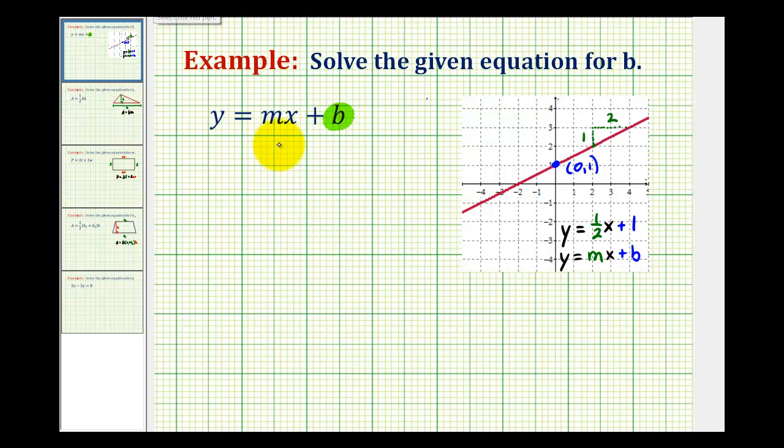To relate this to the given equation, if we want to isolate the variable b or solve for b, we subtract mx on both sides. Here we have mx minus mx, which equals 0. On the left side, we have y minus mx, and on the right side, we're left with just b. Now this equation is solved for b.